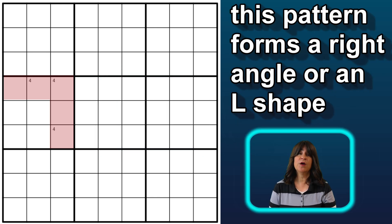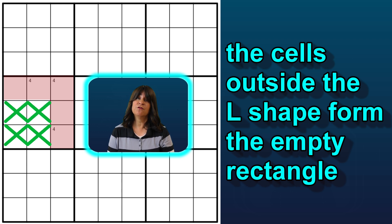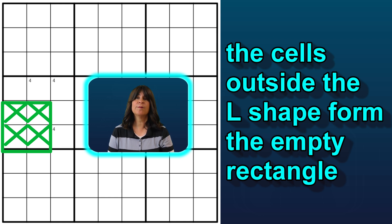In this configuration, the one row and one column that contains the number 4 form a right angle to each other, using the top row and last column. The empty rectangle consists of the cells that cannot contain the number 4 — these 4 cells forming a rectangle. Well, really a square, but a square is a special type of rectangle. So these 4 cells form the empty rectangle in this block.